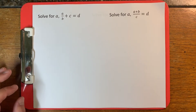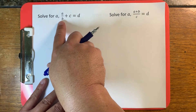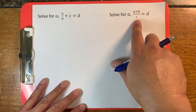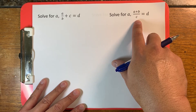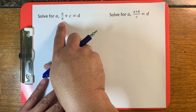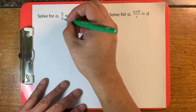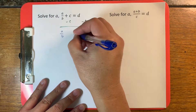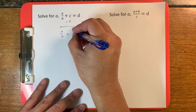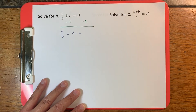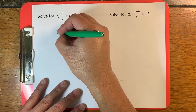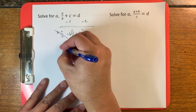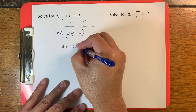In this problem, we're going to work on getting rid of divisions. Here the division is connected with a and b. Because c is separate from a and b, we're going to get rid of c first. So we get a over b is equal to d minus c. Then we get rid of b by multiplying both sides by b, so the b's cancel and we get a is equal to b times (d minus c).